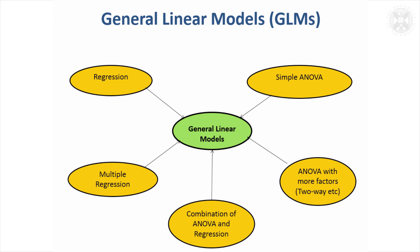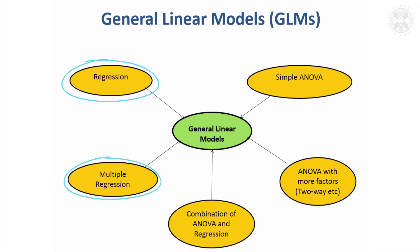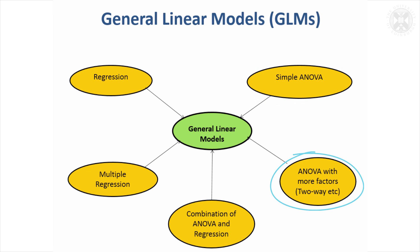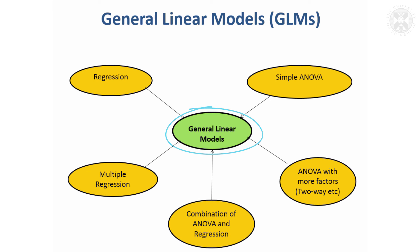Thinking about these general linear models that we'll concentrate on — basically they encompass different types of models we've seen already. We've looked at regression and multiple regression models, and we looked at simple ANOVA. We can in fact have ANOVA with more factors, and we can combine the effects of ANOVA and regression. All of these form a type of general linear model, so they're a flexible class of models. What I'll do first is just recap on what ANOVA was about and what regression was about.